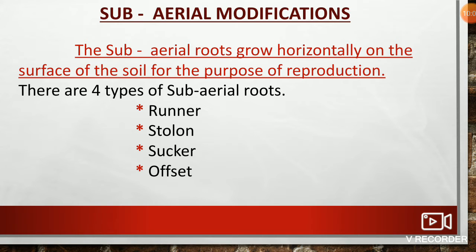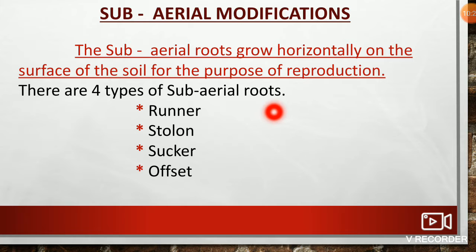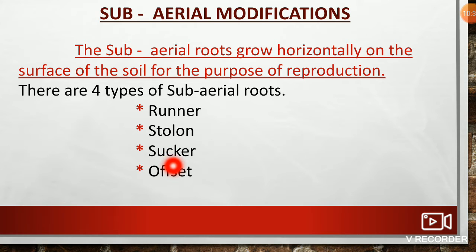Subareal modifications: The subareal stems grow horizontally on the surface of the soil for the purpose of reproduction. There are four types of subareal stems. They are runner, stolon, sucker, and offset.